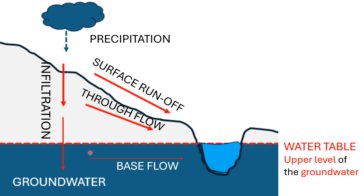If groundwater intercepts the river channel, it reaches the river as base flow. After precipitation, water either runs over the surface into the river or soaks into the earth by infiltration. All the water gathered inside the earth is called groundwater, and the water level of that accumulated water is called the water table — the upper boundary of all the groundwater. The water table is important when applied to the concept of types of rivers, which will be covered in a follow-up lesson.